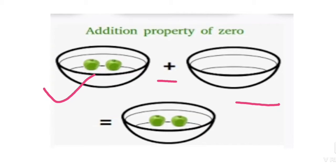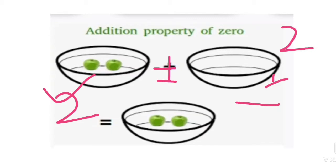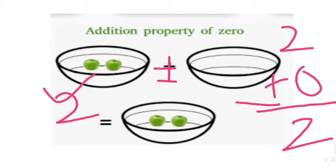In this video we are learning addition of zero. As you can see in the picture, the first dish had two apples and we added nothing — zero. So how many apples do we get? Two apples. Zero added to any number gives the same number.